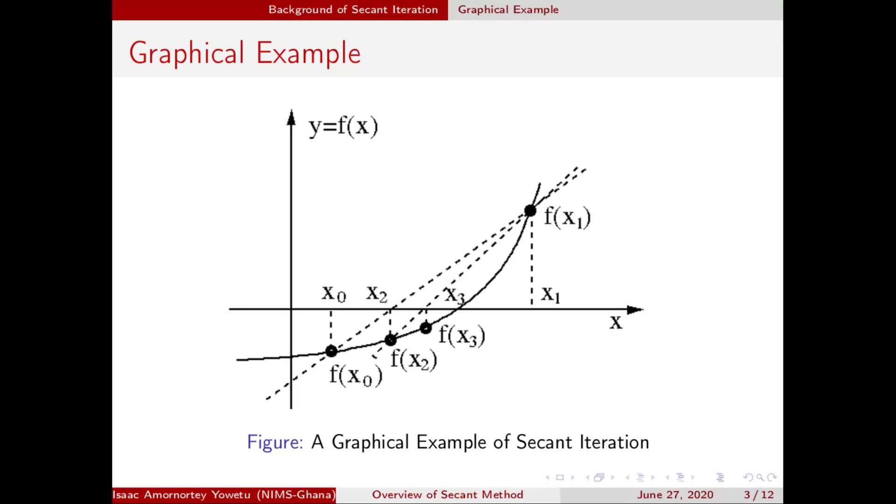Having a graphical example, this is the f(x) function curve. As the method requires, it requires two initial guesses x1 and x0. During each iterative process, once we get x2, we tend to ignore x0 because x2 tends to give us a better approximation than x0. Then we use x2 and x1 to give us x3. Having gotten x3, we tend to forget our x1 and then we use x2 and x3 to give us x4. So we continue with this iterative process until we get our desired approximate value.